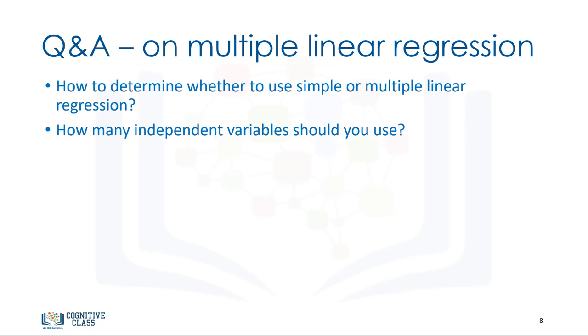The next question is, should independent variables be continuous? Basically, categorical independent variables can be incorporated into a regression model by converting them into numerical variables. For example, given a binary variable such as car type, the code dummy 0 for manual and 1 for automatic cars.